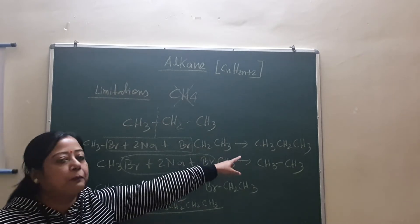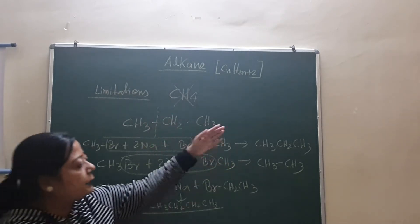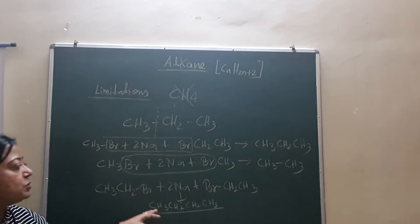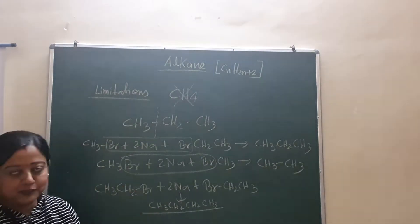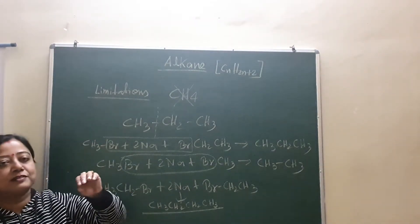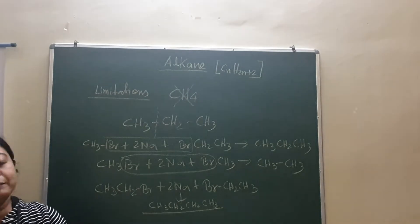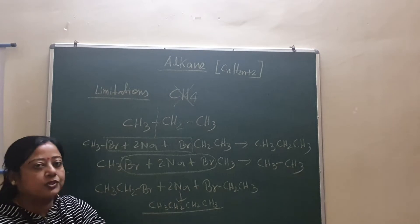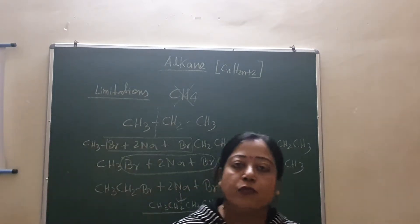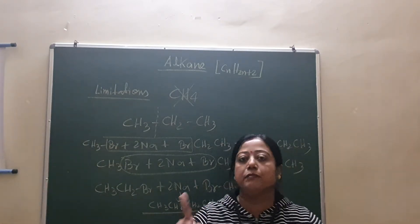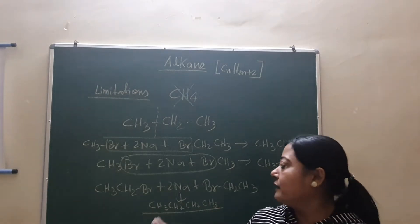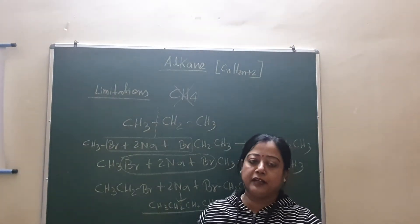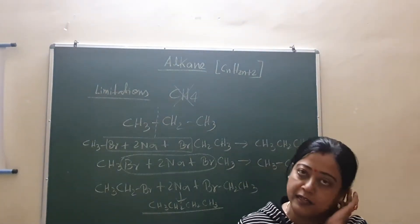In the similar way, in the beaker while moving around, these ethyl bromides can also meet each other. That is Br-CH2-CH3 with another one. And in that case we will get CH3-CH2-CH2-CH3, that is butane. So instead of getting only propane, we get propane, ethane, butane, so many mixture of alkanes. And from this alkane mixture, to separate one alkane is a very tough job because their boiling points are very similar. So we should avoid Wurtz reaction for the preparation of number one methane, and number two, the alkane containing odd number of carbon atoms.